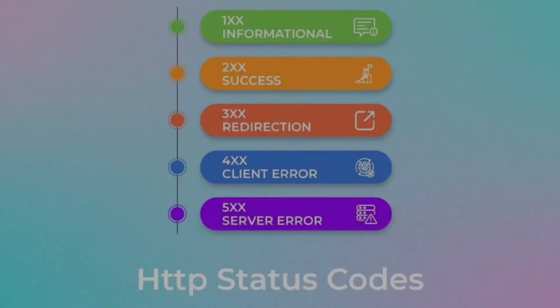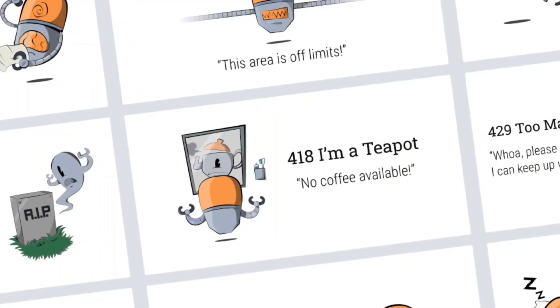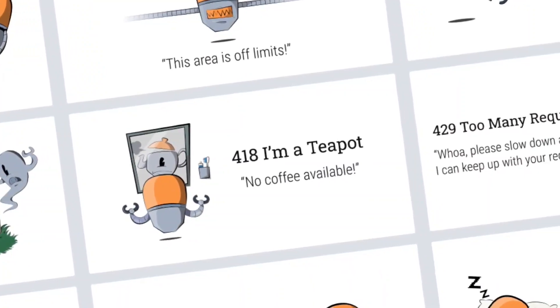So now you know the 18 most common HTTP status codes. From the satisfying 200 OK to the frustrating 404 Not Found, each code tells a unique story about how the web works. If you found this helpful, give this video a thumbs up and share it with your friends — especially that one friend who keeps getting 404 errors. And if you want more tech tips and web knowledge, don't forget to subscribe and hit the notification bell. Thanks for watching.